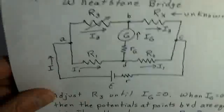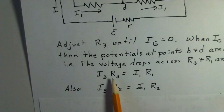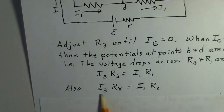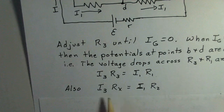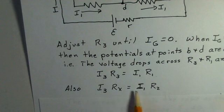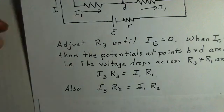So the left half of the circuit generates our first equation here. I3 R3 equals I1 R1. The right side of the circuit generates this second equation. I3 Rx equals I1 R2. We're allowed to divide equations. Algebra provides that. So we're going to divide these two equations.